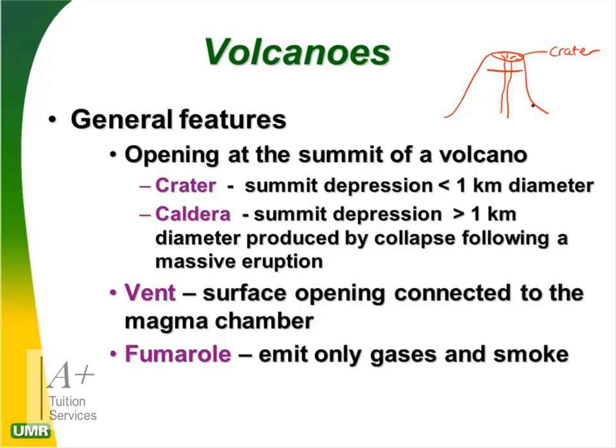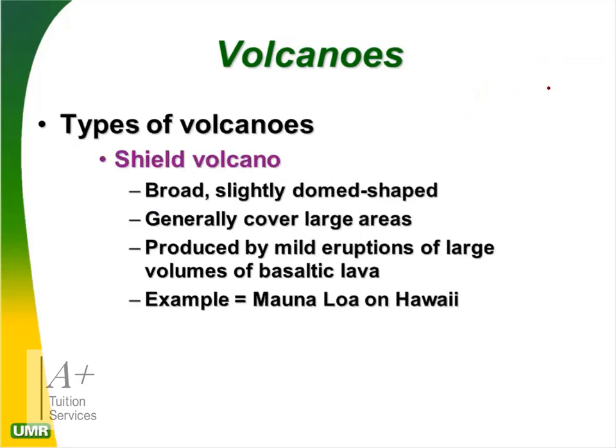A fumarole emits only gas and smoke — it's like a little hole in the volcano that pitches out gas and smoke. To summarize: the crater is at the top; a caldera is a collapsed crater after volcanic eruption; the vent is the opening to the earth's crust from the magma chamber; fumaroles emit only gas and smoke.